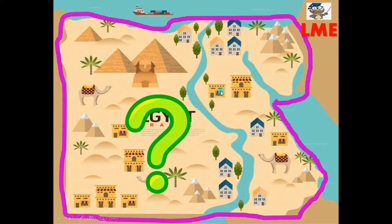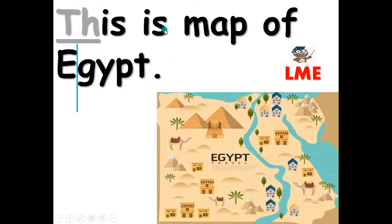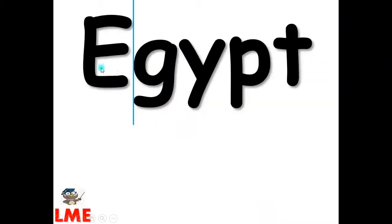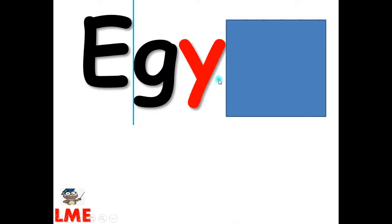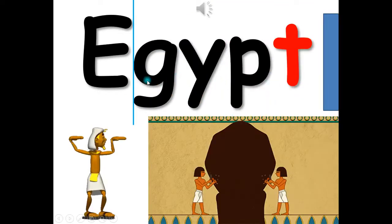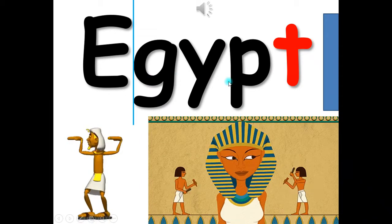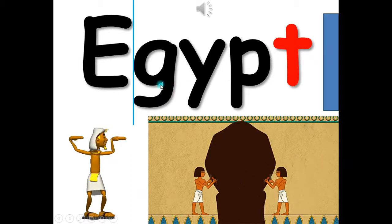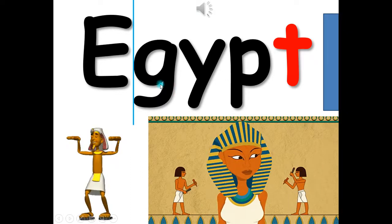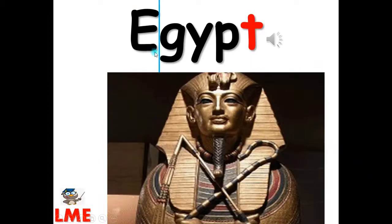Do you know what map this is? This is a map. Do you know what this is? This is a map of a country. Do you know which country this map shows? This is a map of Egypt.